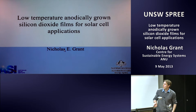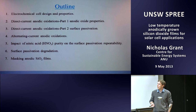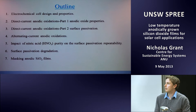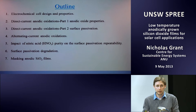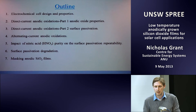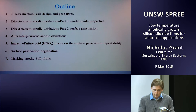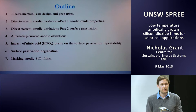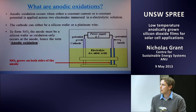Thanks Ivan. Today's talk is about anodic oxide films for solar cell applications. The outline will first look at the electrochemical cell design and properties, then we'll discuss a direct current anodic oxidation procedure — split into two parts: oxide growth mechanisms and properties, and surface passivation achieved by DC anodic oxidation. Then we'll look at alternating current anodic oxidations, the impact of nitric acid purity on surface passivation, and finally anodic oxides for masking purposes.